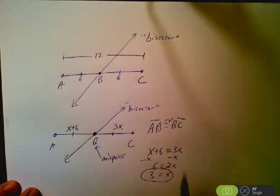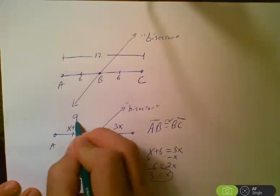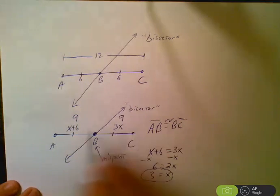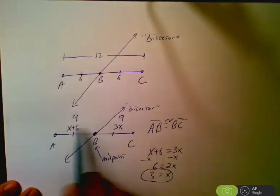Let's check it. Let's make sure it worked. 3 plus 6 is 9. 3 times 3 is 9. 9, of course, is the same as 9. And now you got the whole thing.